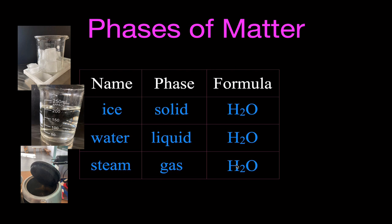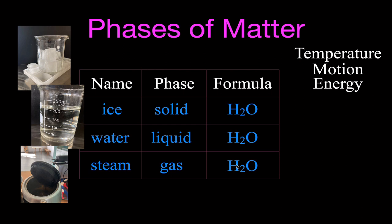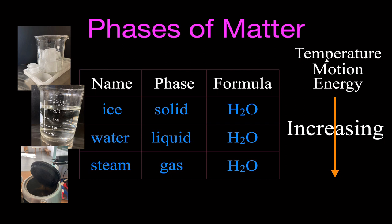Most of the time, my students will come up with temperature — ice is at a lower temperature, steam is at a higher temperature. But what is temperature really a measure of at a microscopic particle level? It's the motion. The higher the temperature, the greater the motion of the particles. Really, it's the amount of energy the particles have. As you go from a solid to a liquid to a gas — from ice to water to steam — you have increasing energy, increasing temperature, and increasing motion. It's all about the energy.